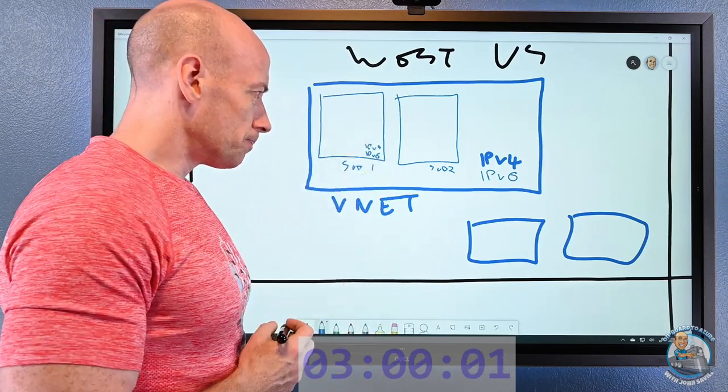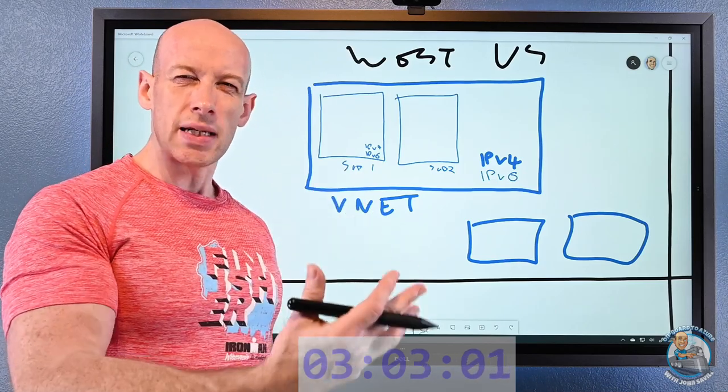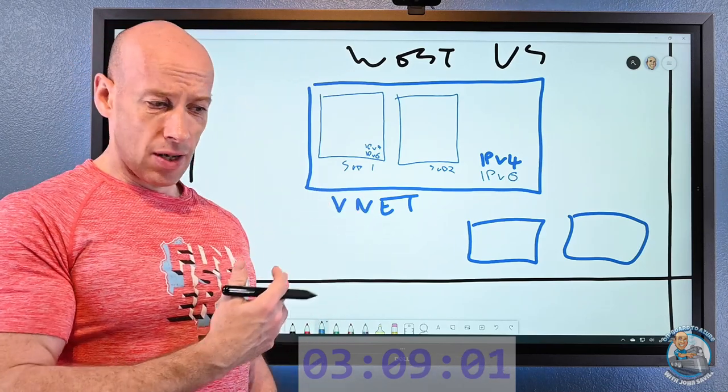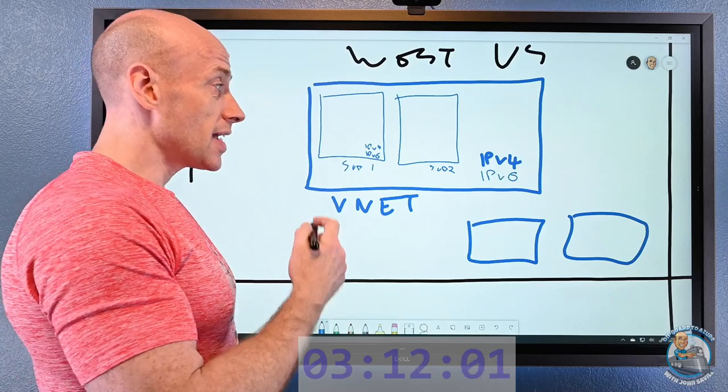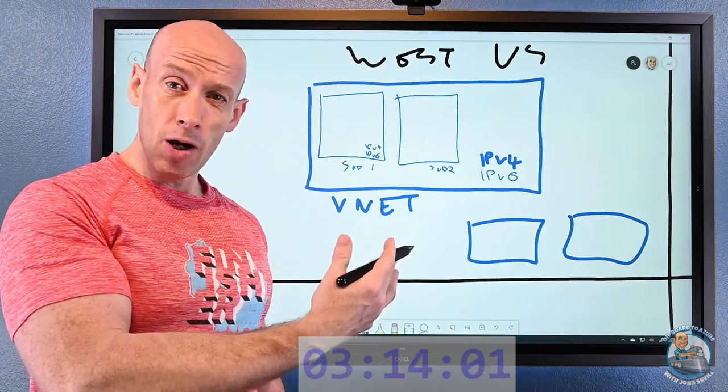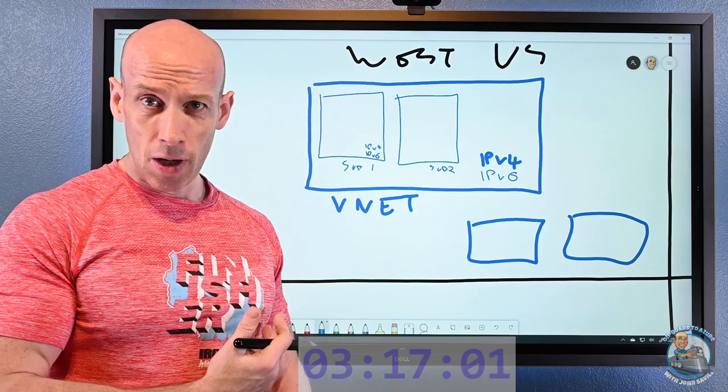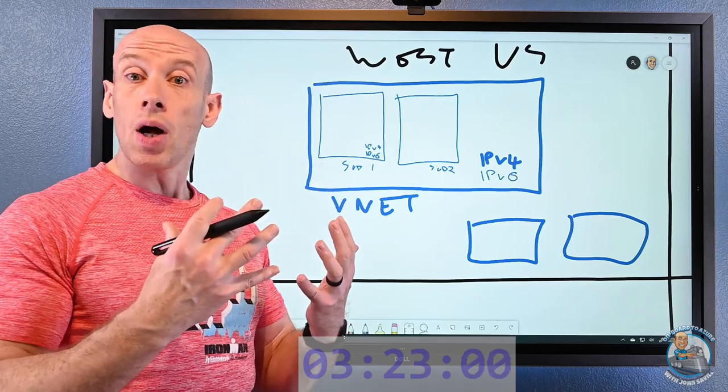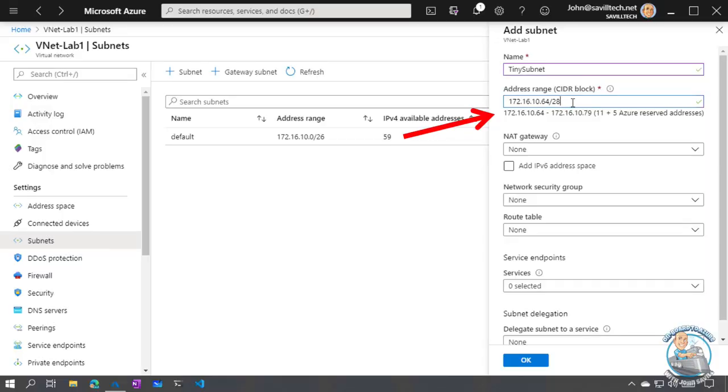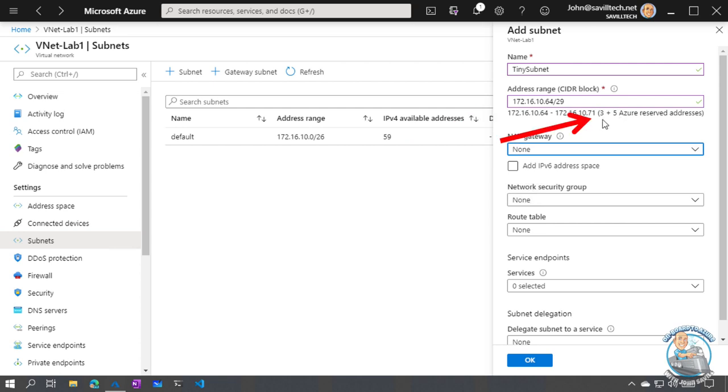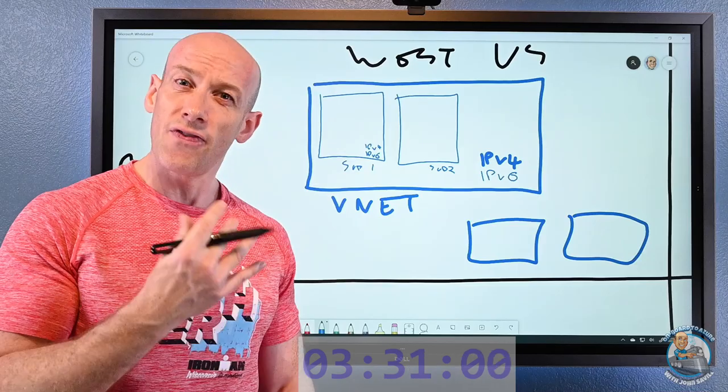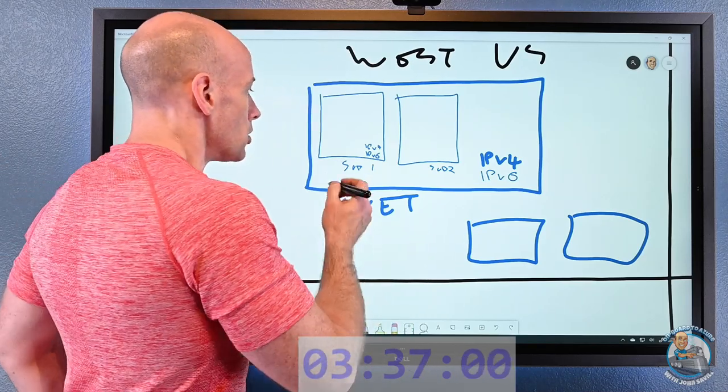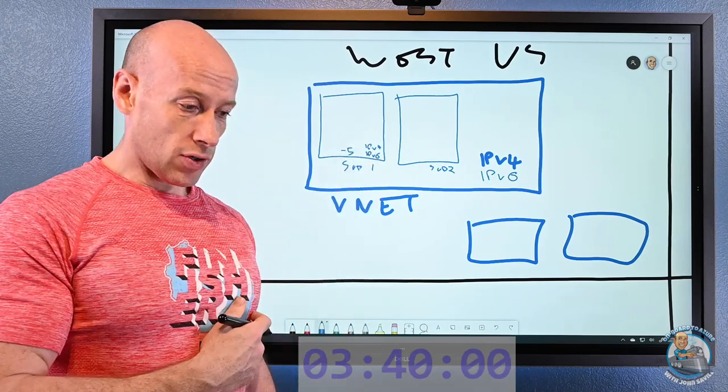When I create a subnet, the smallest one I'd ever create is a slash 29. That would normally give me eight usable IPs, but I always lose the first IP because that is the network address. Then Azure takes the next one for its own gateway purposes. Then it takes the next two for its own DNS purposes. And then the last IP address is always just used for the broadcast address. So that means if I had a slash 29 I'd have three usable IP addresses. So any subnet I create I always lose five IPs. Part of the protocol and just what Azure needs itself. So we always subtract five from whatever IP addresses we have.